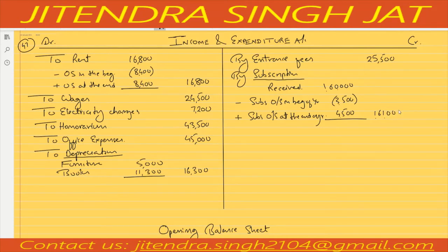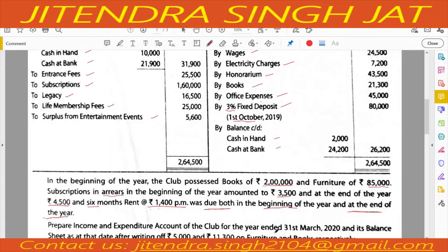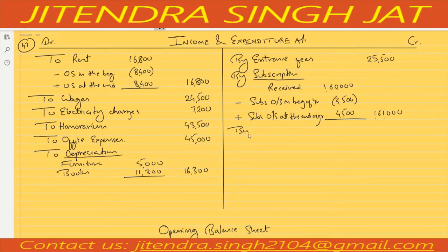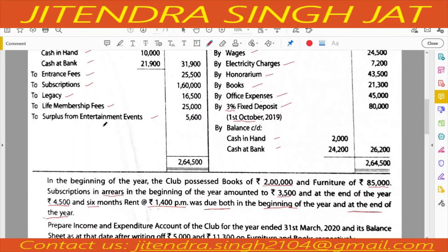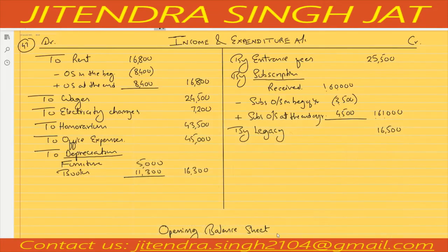Legacy is treated as income at 16,500. Life membership fees of 16,500 is not treated as income because it is for the whole life — it is considered a liability. Surplus from entertainment events of 5,600 is income.